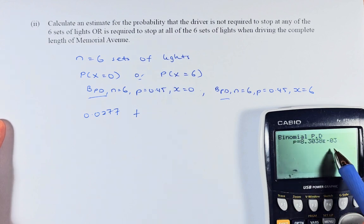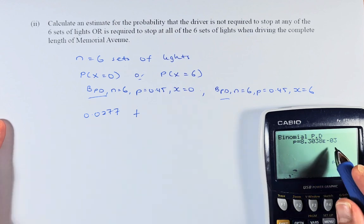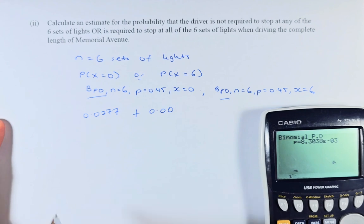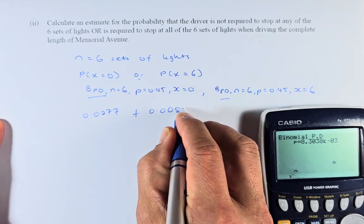I have to break it down. So this means the probability of 0.00. Minus 3 means 0.00, there are 3 zeros there. And it's 83.